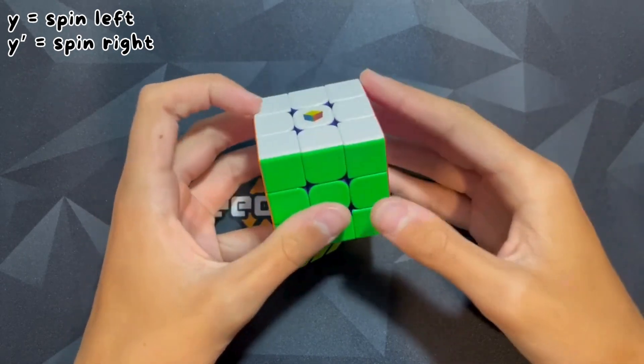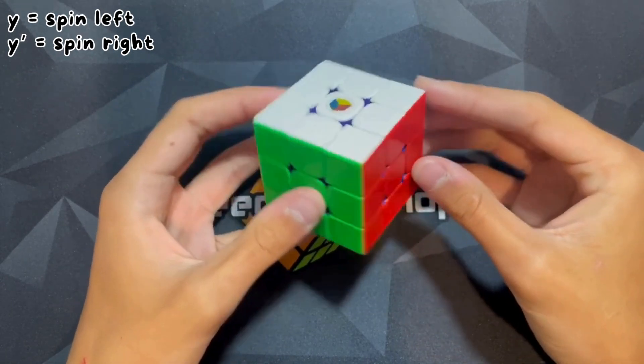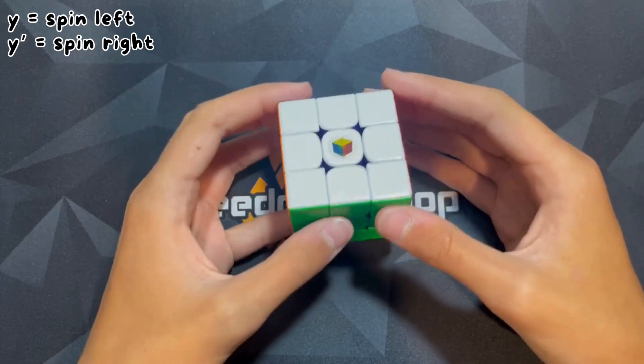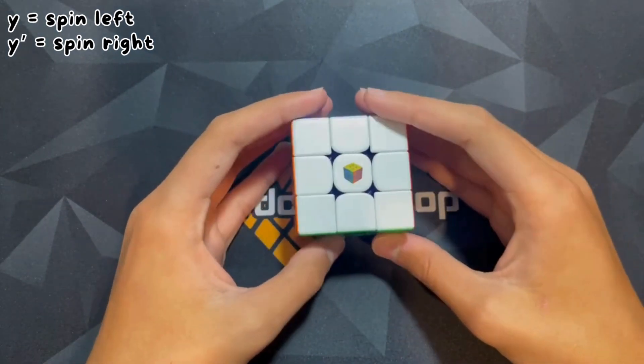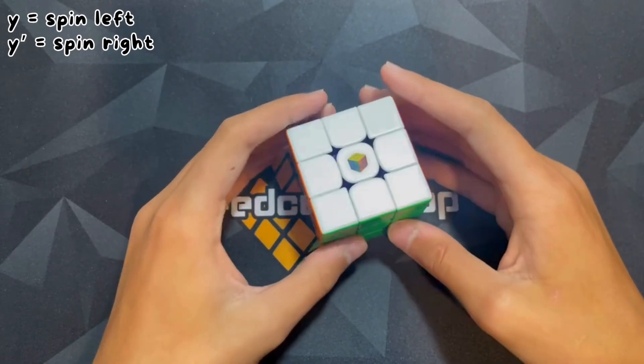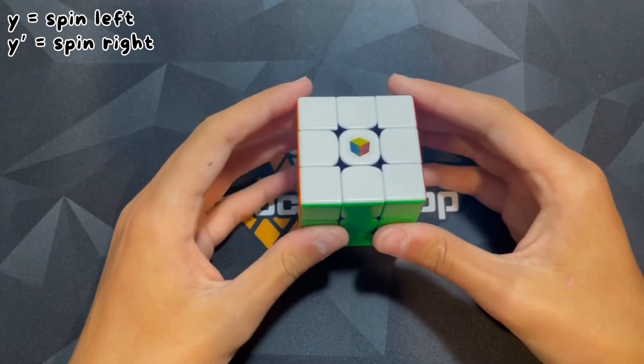A good example for this is the V perm, although I don't do that V perm so you won't see the algorithm up there, but that has a Y rotation. So next up is the Z perm.